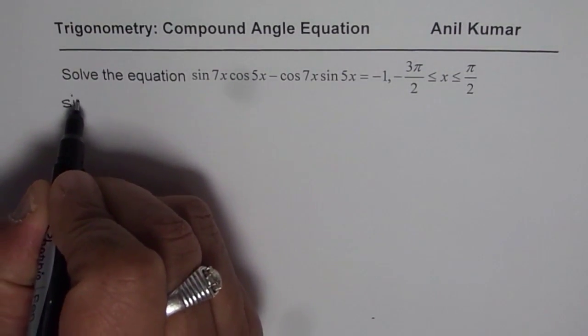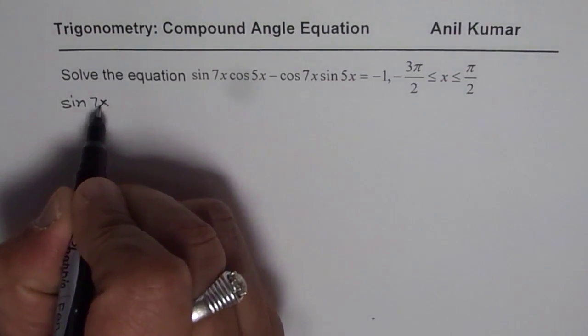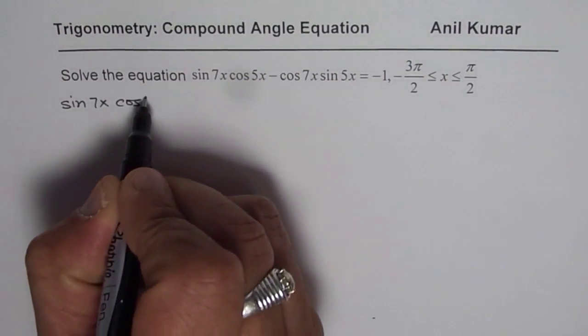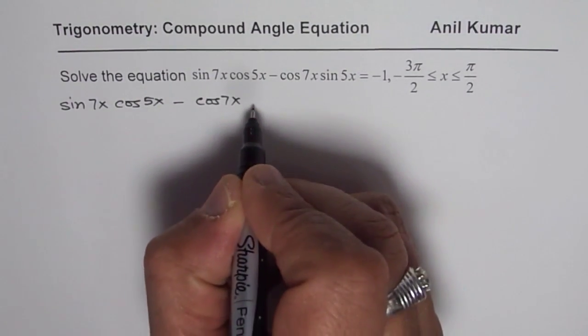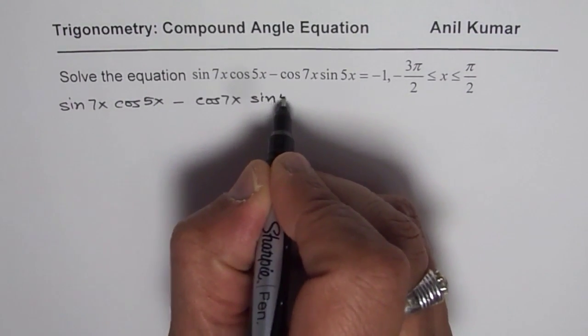The given equation is, let me rewrite this, sin 7x cos 5x minus cos 7x sin 5x.